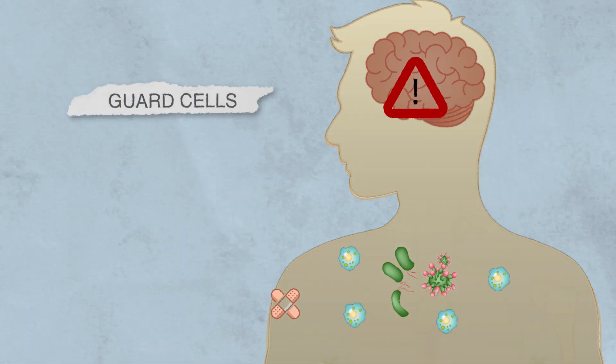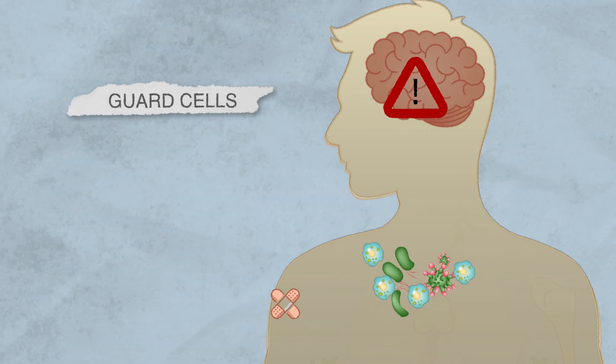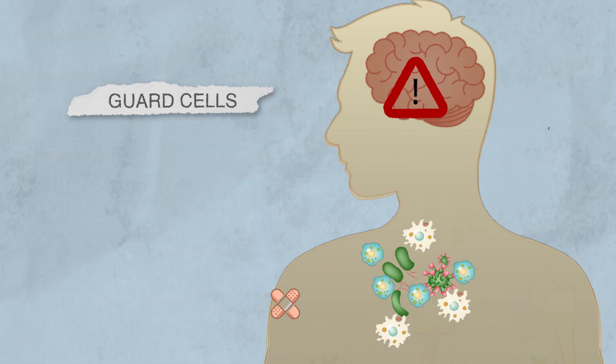First, your guard cells come and eat up these intruders. When help is needed, these guard cells will send a message to your body's soldiers who rush to the battlefield to help the guards kill these bacteria.